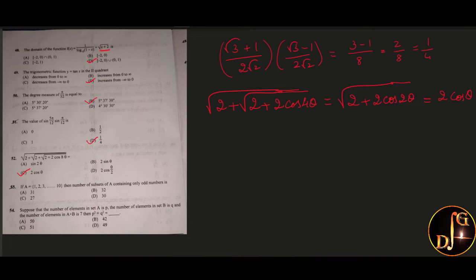Next, if A is equal to 1, 2, 3 up to 10, then the number of subsets of A containing only odd numbers. So 1 to 10 has 5 odd numbers. Number of subsets is 2 power 5. In 2 power 5, empty set is also included, but we only want sets which contain odd numbers. So we have to remove the empty set. Therefore, the answer is 32 minus 1, that is 31. That is option A.